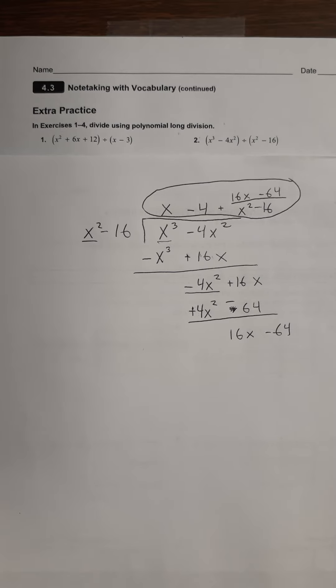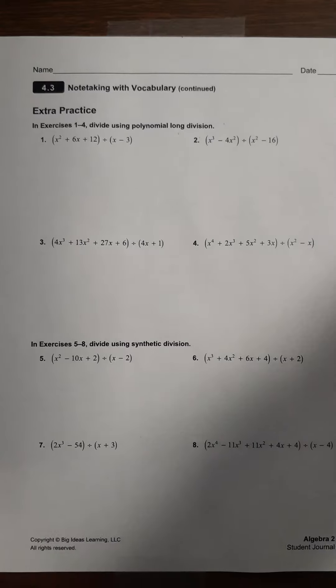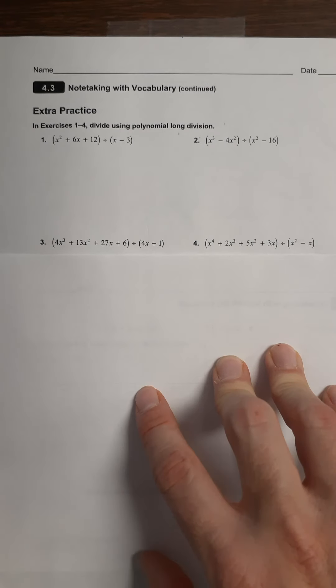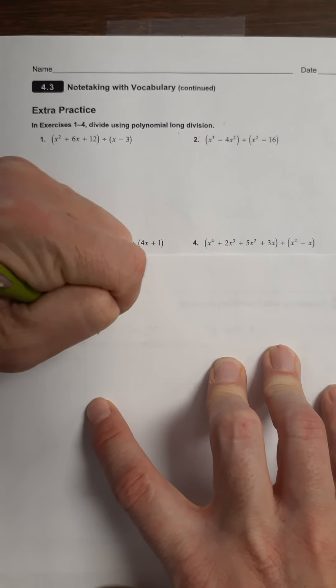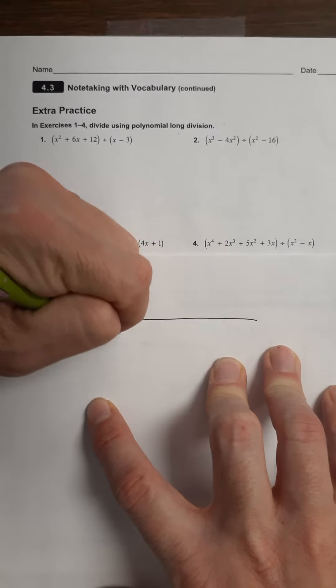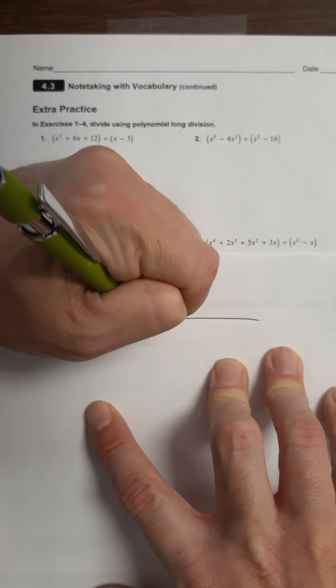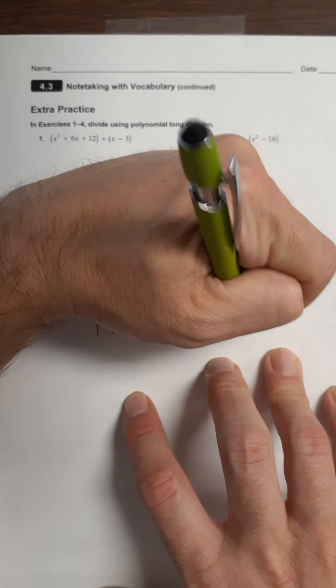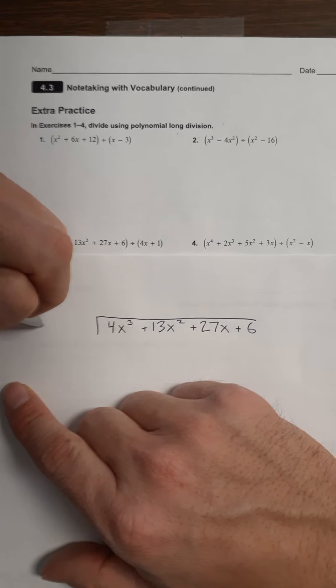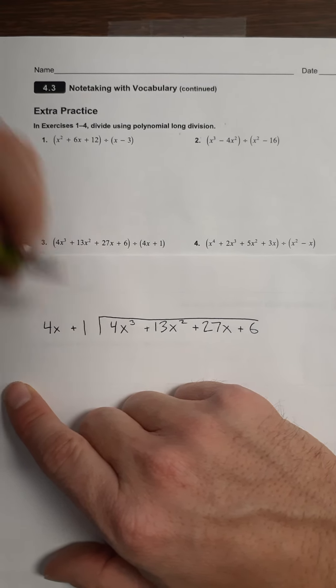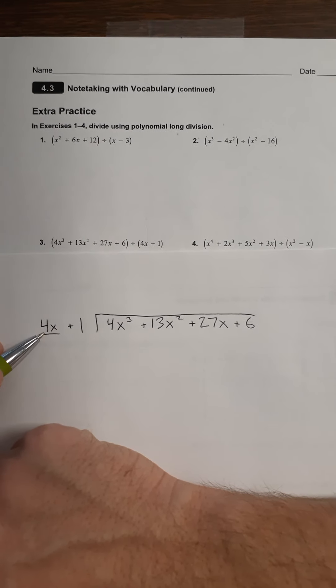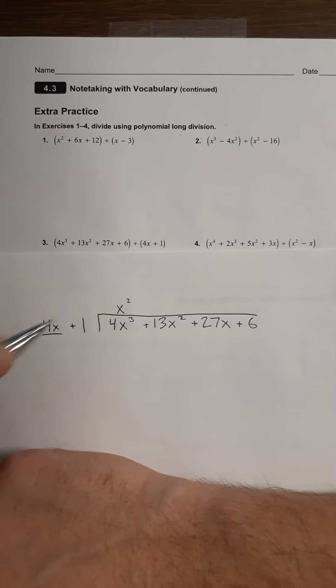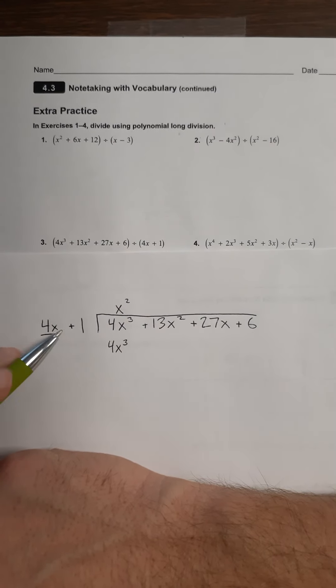Let's do number 3. And then I think once we've got 3, that's probably enough polynomial long division for us for now. So this one will go inside: 4x to the third plus 13x squared plus 27x plus 6, divided by 4x plus 1.